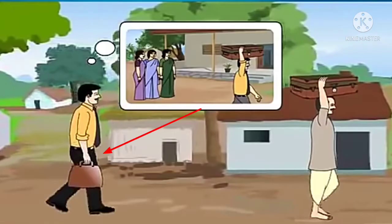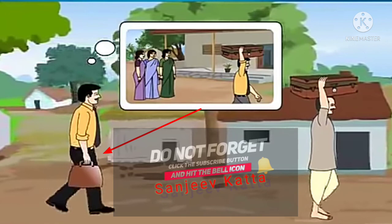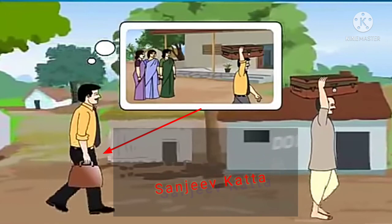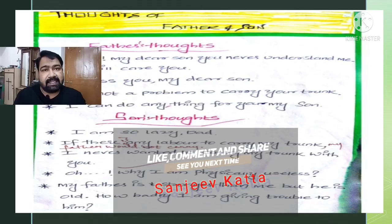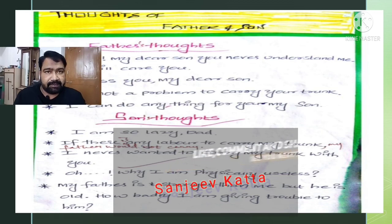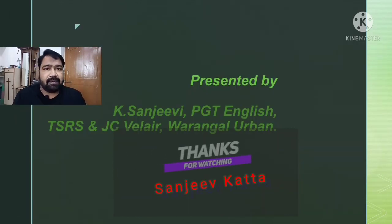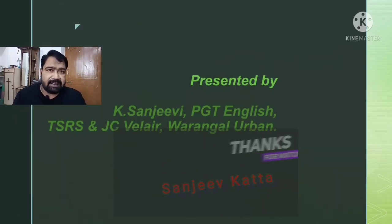Son's thoughts: 'I am so lazy, Dad. I cannot do any work. If there is any labor to carry the trunk, my father would not carry it. I never wanted to carry my trunk with you, Dad. Oh, why am I physically useless? My father is stronger than me but he is old. How badly I am giving trouble to him.' In this way we can describe the thoughts of a person. I hope you understood how to write a description.